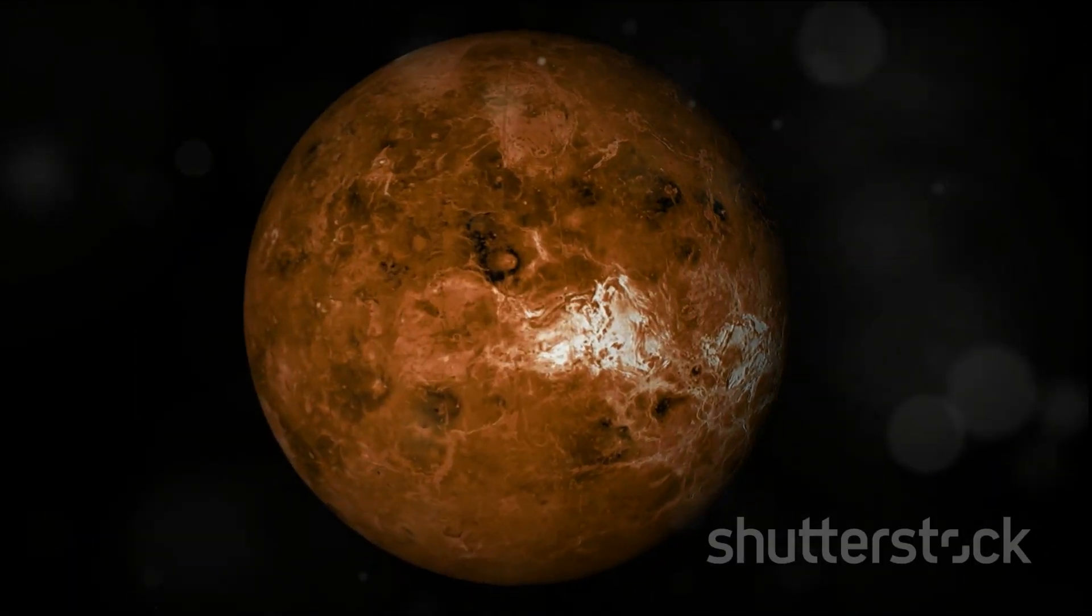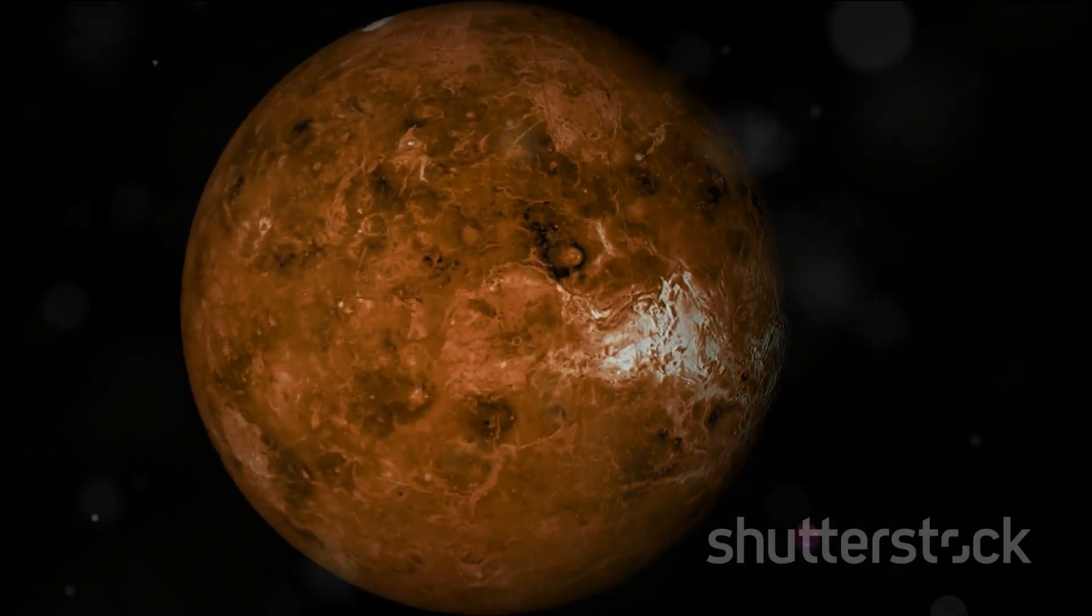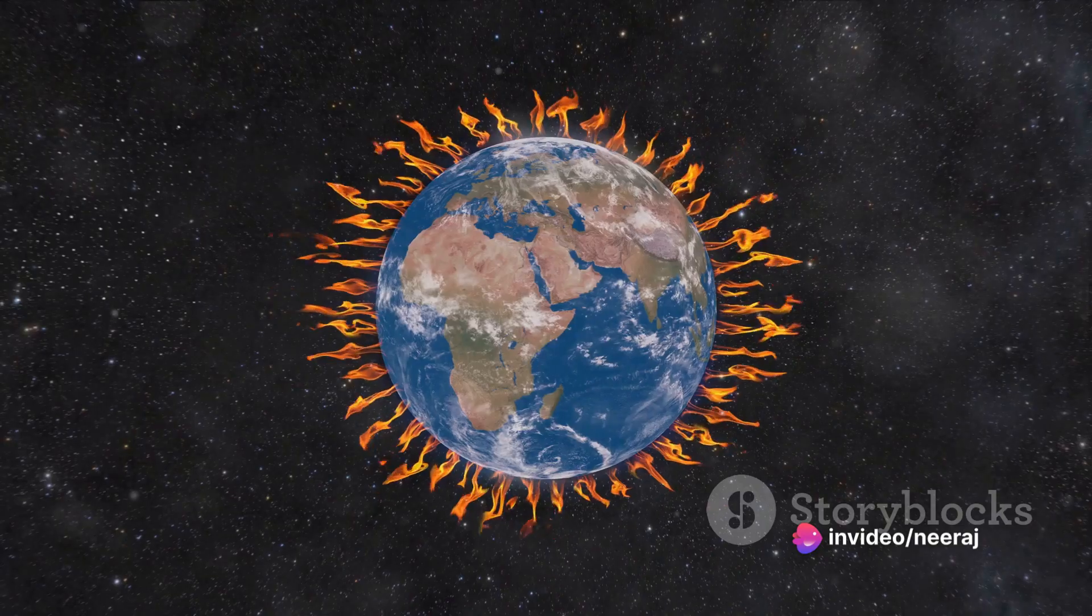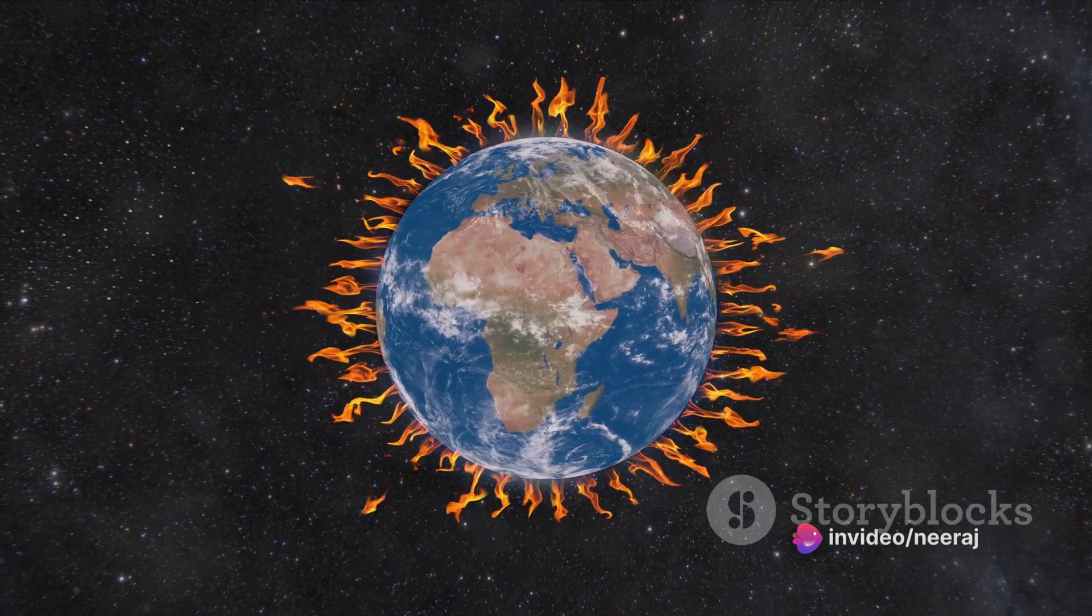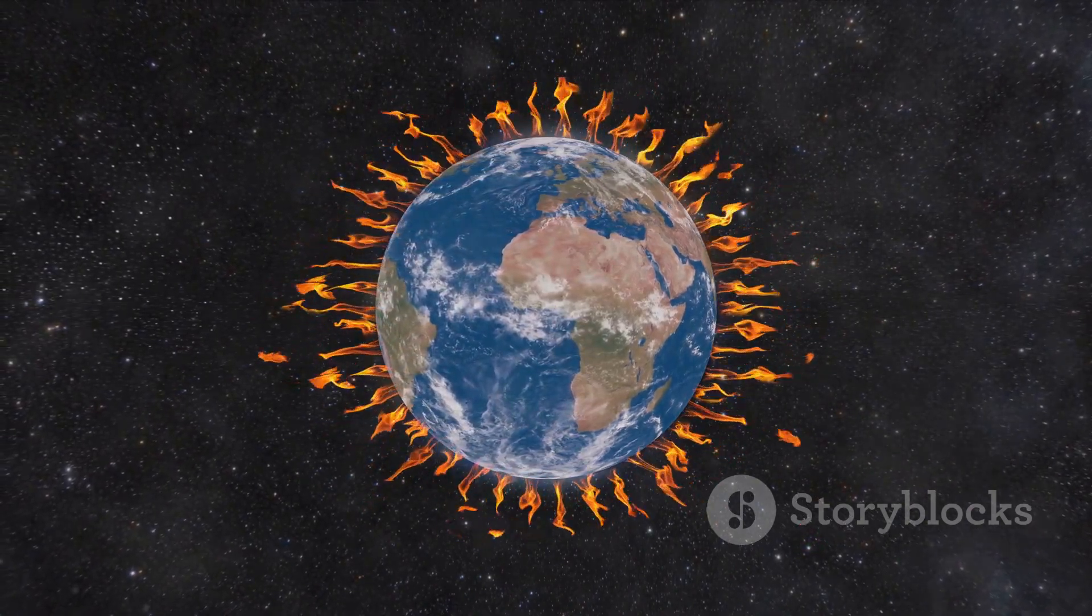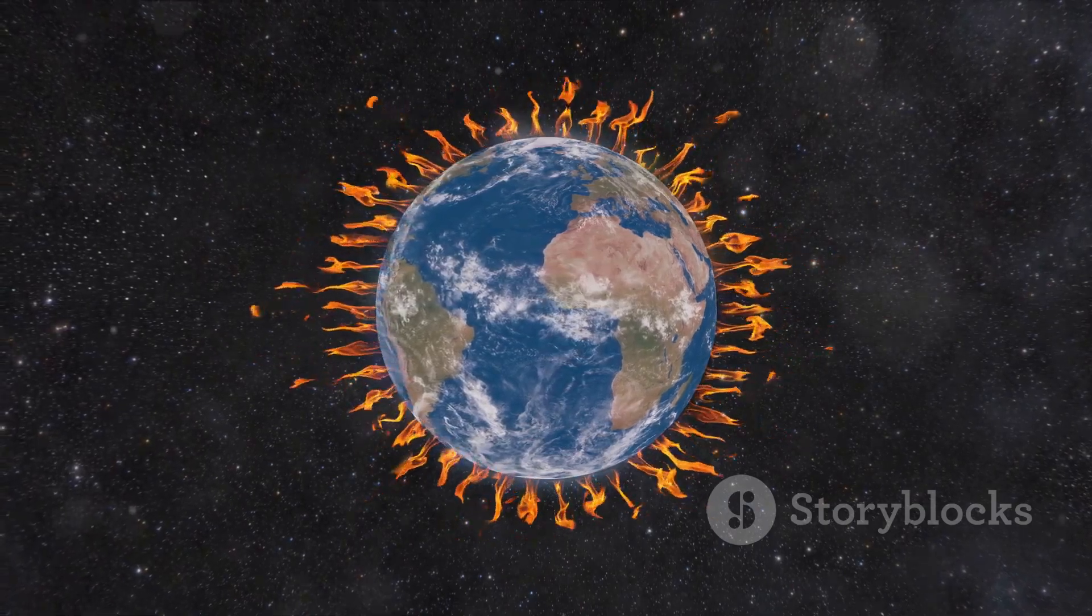This leads us to one of the primary reasons for Venus's extreme heat: the greenhouse effect. The planet's dense atmosphere, made up largely of carbon dioxide, traps in heat from the sun. This heat has nowhere to go, so it simply builds up, turning Venus into a sizzling celestial furnace.